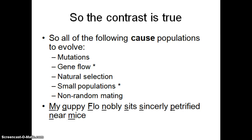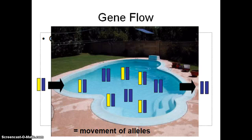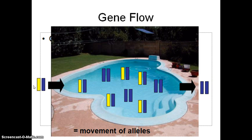So now we're going to focus on gene flow and small populations. Gene flow is really just the movement of alleles into or out of a gene pool. That could be due to a lot of different things — it could be migration, immigration, or any kind of movement of alleles into or out of that gene pool.